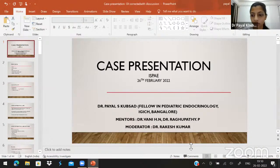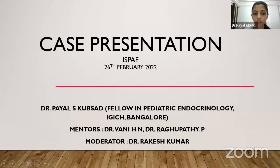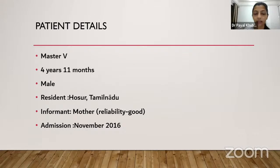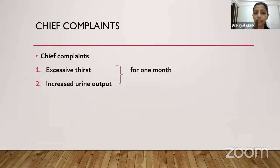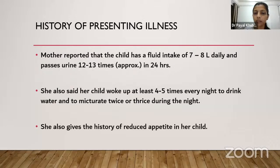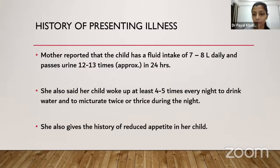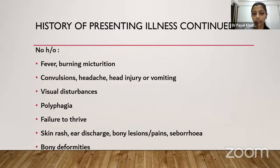Good evening to one and all. I am Dr. Payal S. Kupsad, pursuing my fellowship in pediatric endocrinology at Indira Gandhi Institute of Child Health. My case: Master V, four years eleven months old male child, resident of Hosur, Tamil Nadu. He was admitted in November 2016 with chief complaints of excessive thirst and increased urine output for the last one month. Mother reported fluid intake of seven to eight liters daily, urinating twelve to thirteen times in 24 hours, waking four to five times every night to drink water, and reduced appetite.